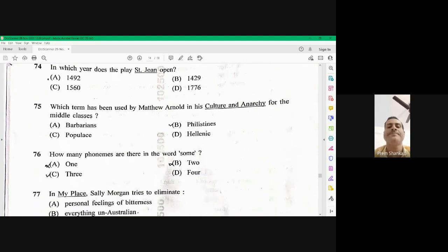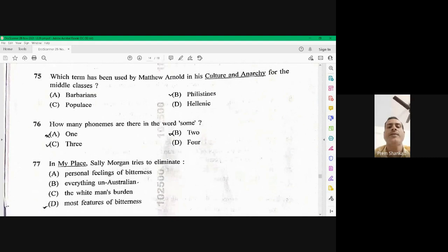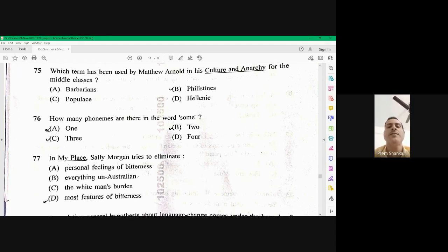Question number 77. In my place, Sally Morgan tries to eliminate, you know, my place is in autobiographical context of Sally Morgan. So there she talks about the personal feelings of bitterness. She is trying to eliminate personal feelings of bitterness. A is the right option.